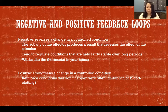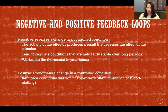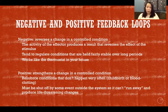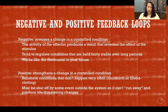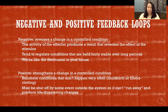In those cases, we need something outside the system to shut off that strengthened condition so it doesn't run away. For childbirth, that would be the birth of the child — then we return to homeostasis and those hormones are again regulated via negative feedback loops. For blood clotting, the event would be the blood vessel healing sufficiently that the hemorrhaging stops, allowing clotting to return to normal homeostasis.